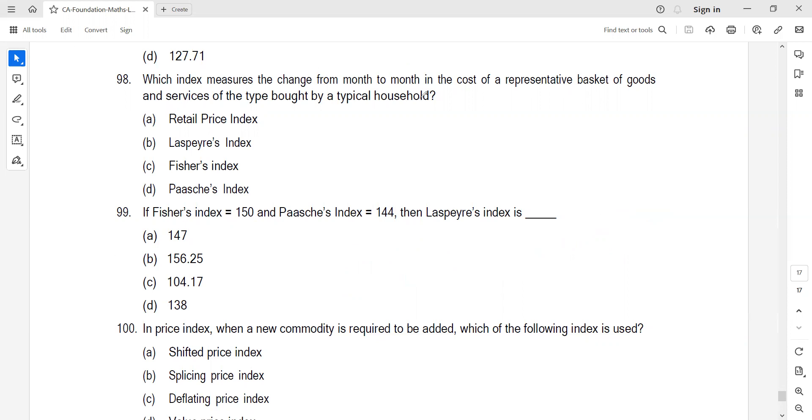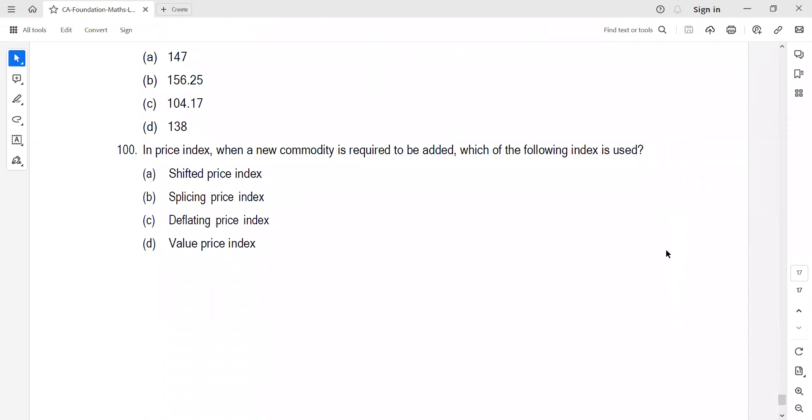Last question: In price index, when a new commodity is required to be added, which index is used? Clearly splicing. We learned two types of splicing: forward and backward. Here you complete your stats questions for MTP Series 1 for June 2023. I wish you all the very best for your examinations. Thank you everyone.